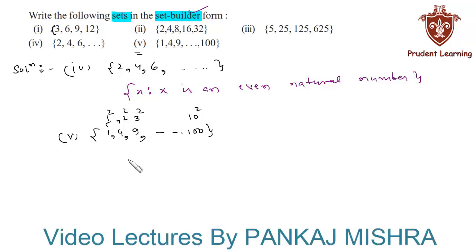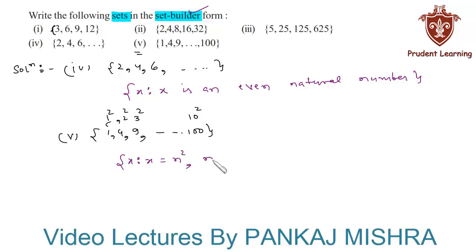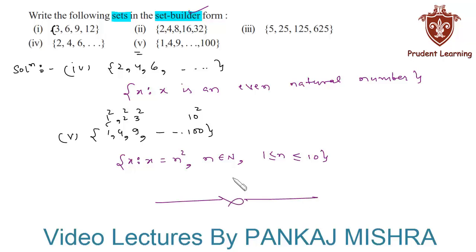Therefore, the given set can be written in set builder form as: X such that X = n², where n belongs to natural numbers and n is greater than or equal to 1 and less than or equal to 10. So this completes our solution.